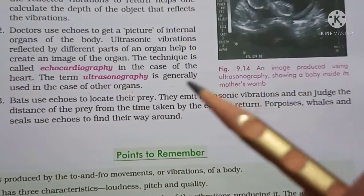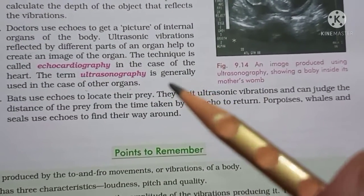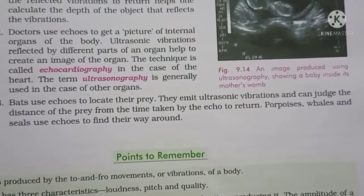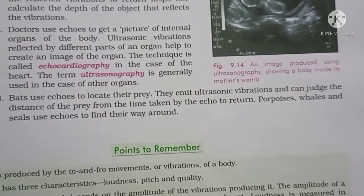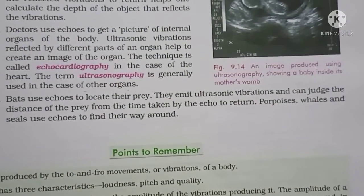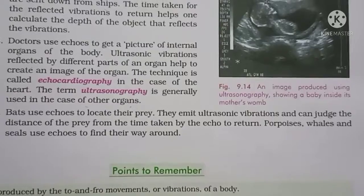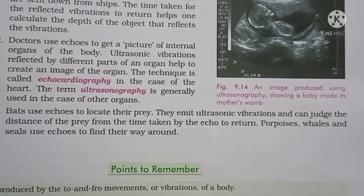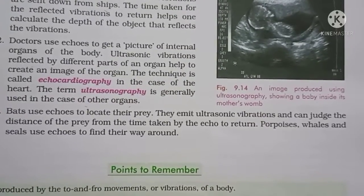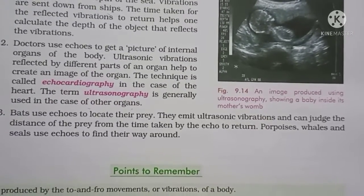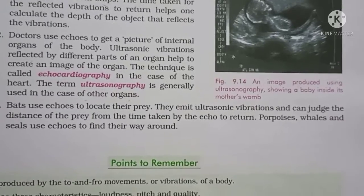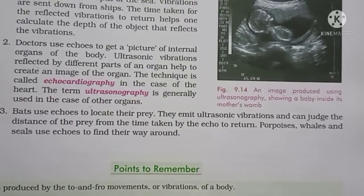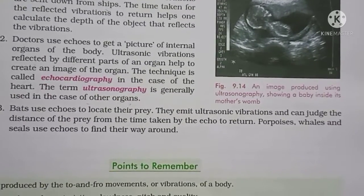If it is their prey, they will move in the forward direction. If their sense of smell tells them it is not food but an obstacle, they change their direction. You must have seen bats moving at much speed — sometimes they may even hit us or fall on the ground. Whales and seals also use echoes to find their way around in water.